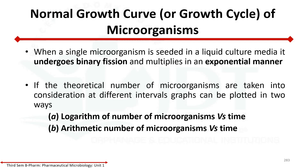Now we will study the normal growth curve of microorganisms. We will study the number of microorganisms at different time intervals — it may be 10 minutes, 20 minutes, or 30 minutes. We determine the growth of microorganisms and then plot a graph. We can plot the graph in two ways: either logarithmic number of microorganisms versus time, or arithmetic number of microorganisms versus time.